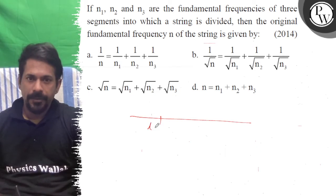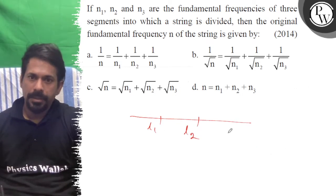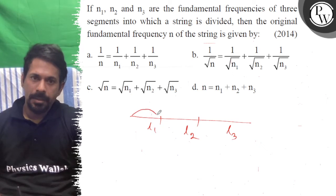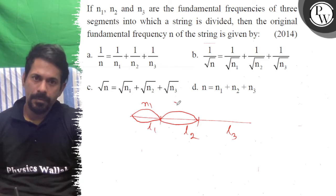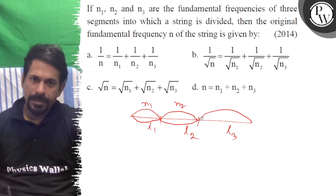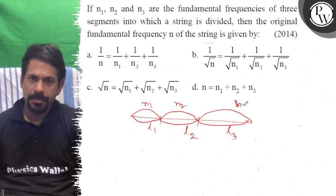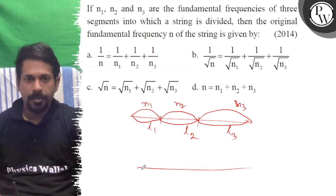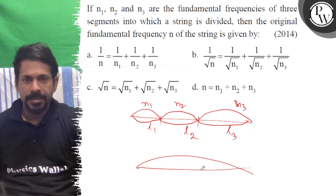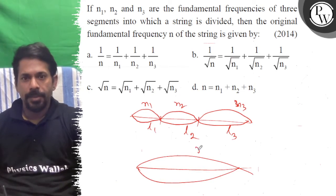So let's see here. L1 is here, L2 is here, L3 is here. The fundamental frequency of L1 is N1, the fundamental frequency of L2 is N2, and the fundamental frequency of L3 is N3 — three segments. Now, let's say the whole fundamental frequency is N.